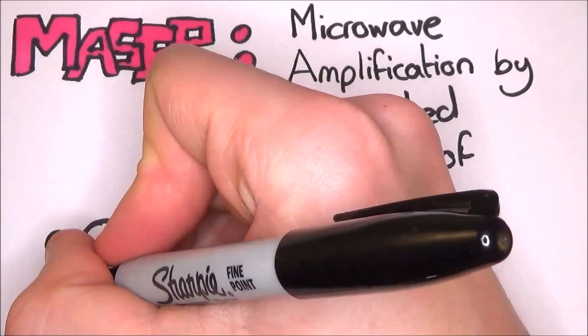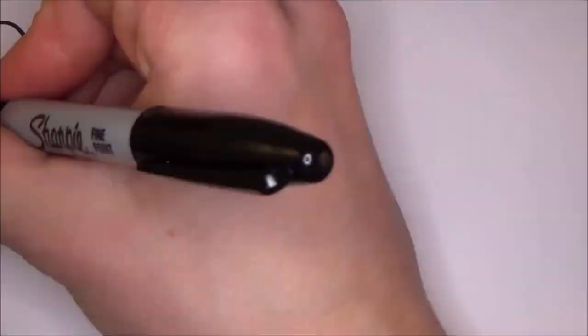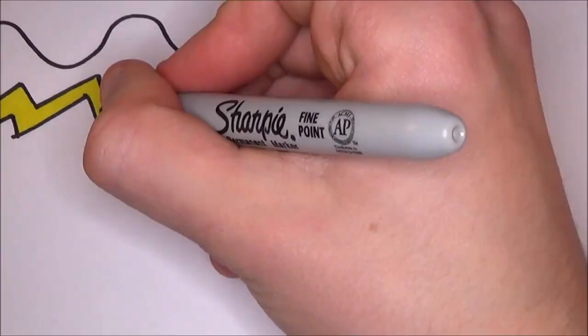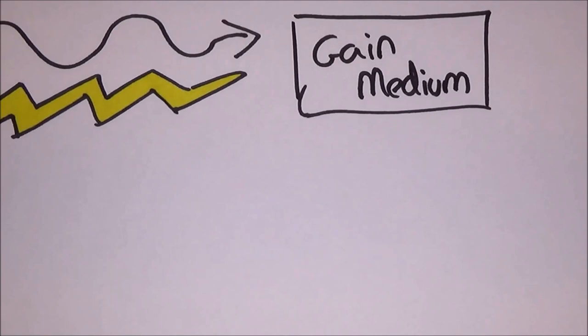When atoms have been induced into an excited energy state, they can amplify radiation at a proper frequency. A source of energy, normally light or electricity, is supplied into a gain medium. This makes the electrons in the medium oscillate quicker and emit a beam of radiation. The gain medium is often a crystal like sapphire.